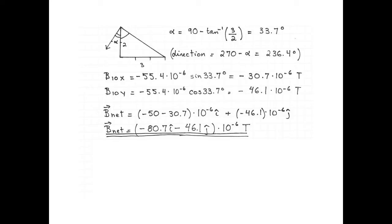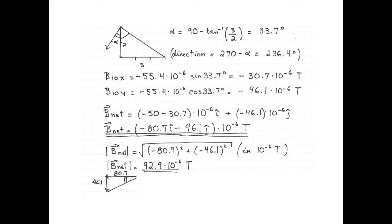Now we need the magnitude and the direction. For the magnitude, we use the Pythagorean theorem. Square root of minus 80.7 squared plus minus 46.1 squared gives us 92.9 microtesla.